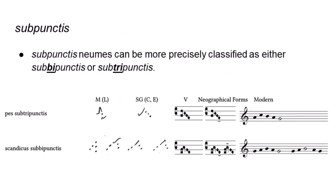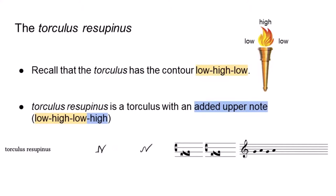The descending notes of the pez subpunctus are invariably printed as puncta inclinata in the Vatican edition. Subpunctus neumes can be more precisely classified as either subbipunctus or subtripunctus. The torculus resupinus has the contour low-high-low-high. It can be thought of either as a torculus with an added upper note, as its name implies, as a double pez, or as a parectus preceded by a lower note, which the notation of the Vatican edition implies.